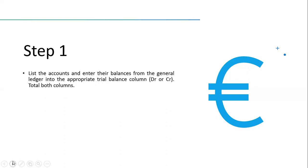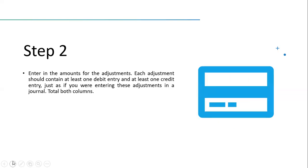Step two is to enter the amounts for the adjustments. Each adjustment should contain at least one debit entry and at least one credit entry, just as if you are entering these adjustments in the journal. Remember, a journal shows the account to be debited and then the account to be credited.